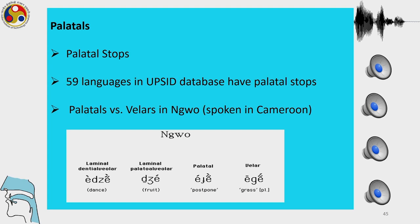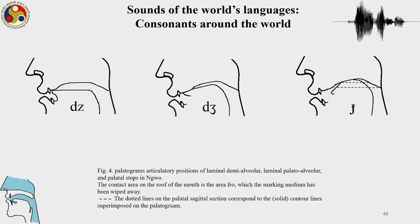The distinctions between the four places of articulation are: laminal dental-alveolar, the laminal palatal-alveolar, palatal, and velar. It is possible to have all four places of articulation — alveolar, palatal-alveolar, palatal, and velar — in a single language. In Ngo, for the dental-alveolar sound, the laminal blade of the tongue makes an occlusion in the alveolar region between the dental and alveolar region. Then we have the palatal-alveolar and the palatal sagittal sound — these are the three stops in Ngo. The dotted lines on the palatal sagittal section correspond to contour lines superimposed in the palatogram.